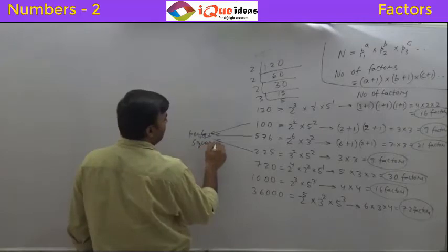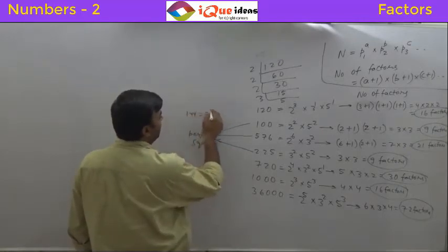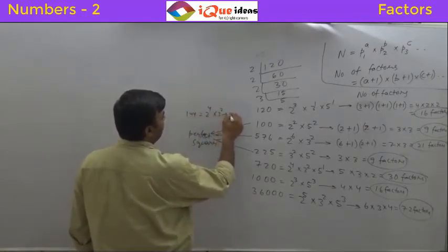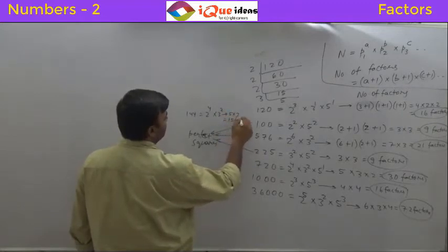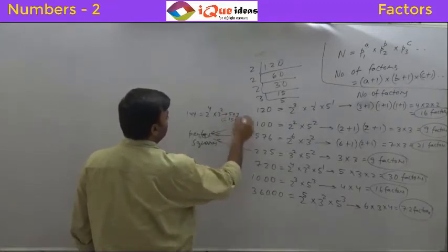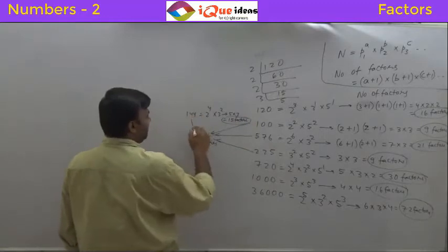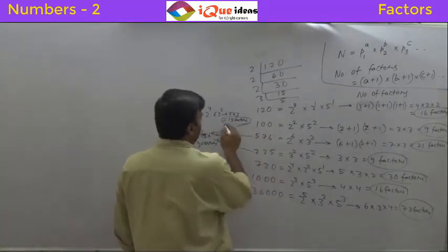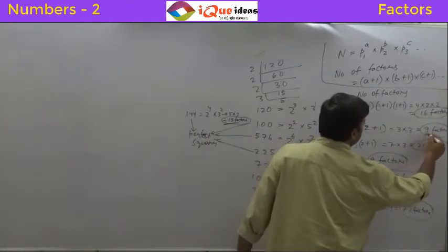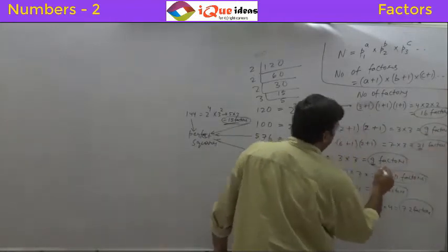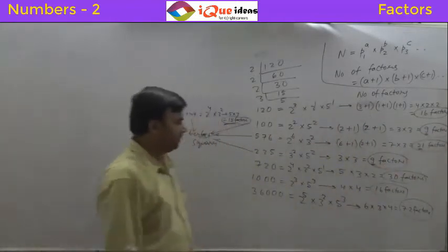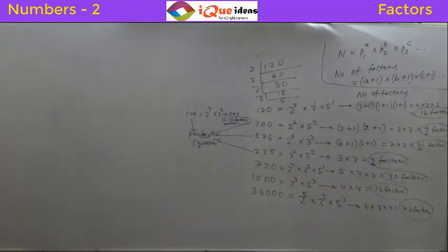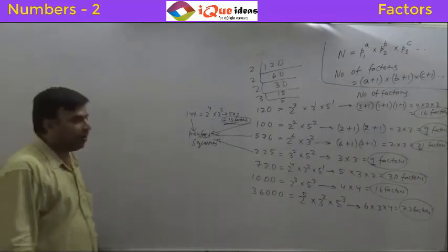Earlier we had done 144 — that was 2 to the power 4 into 3 squared, and the number of factors was 5 into 3, that was 15 factors. What is one thing common about all of them? 144, 100, 576, 225. If you see, the number of factors for each one of them is an odd number.